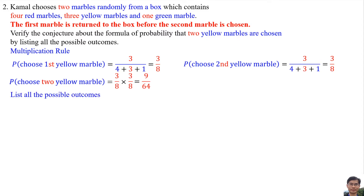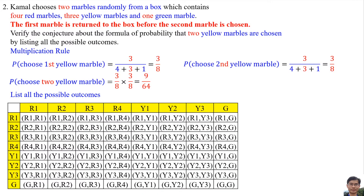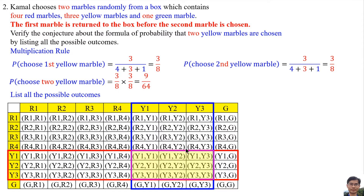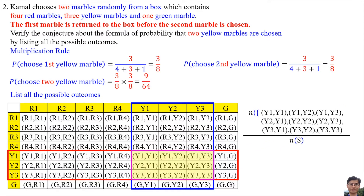Now listing all the possible outcomes: R1 means the first red marble, R2 the second, R3 the third, and R4 the fourth red marble. Y1 is the first yellow marble, Y2 the second yellow marble, Y3 the third yellow marble, and G means the green marble. The possible outcomes for 2 yellow marbles being chosen give a probability of 9 per 64. Here 64 is the total number of possible outcomes and 9 is the number of favourable outcomes. Both the Multiplication Rule and listing all possible outcomes give the same answer.